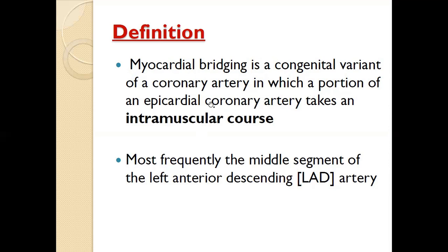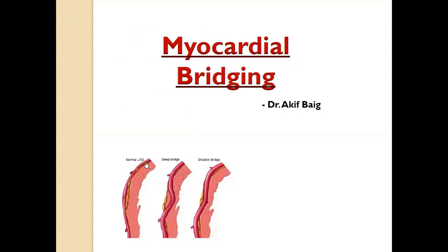Normally, any coronary artery runs over the muscle — over the myocardium. In the case of myocardial bridging, some part of the coronary artery goes inside the muscle and some part of the muscle overlies this coronary artery. This overlying muscle compresses the coronary artery during systole, leading to symptoms.